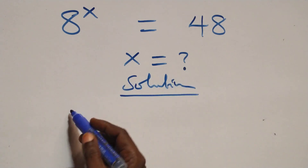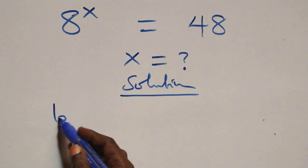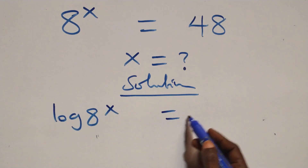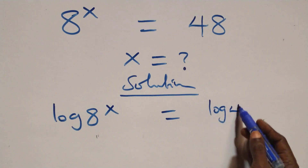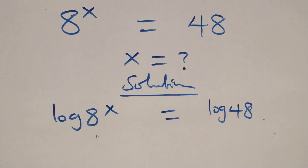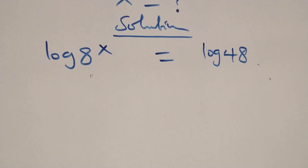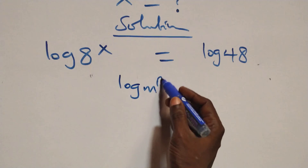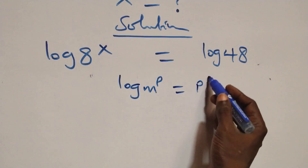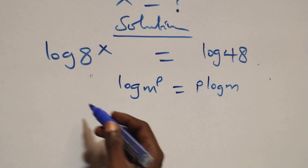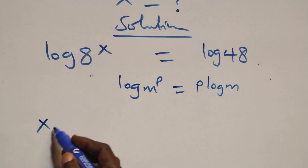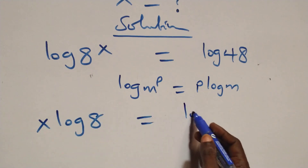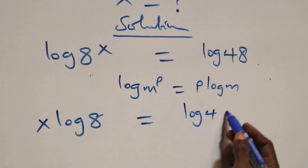From what we have here, we take the log on both sides. That is, we have log 8 raised to power x equals to log 48 on this side. The next step: we apply the rule of logarithms — when we have log m raised to power p, this is the same thing as p·log m. So the power becomes x, giving us x·log 8 equals to log 48 on this side.